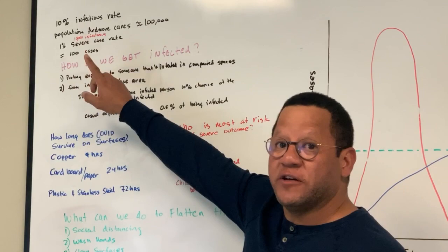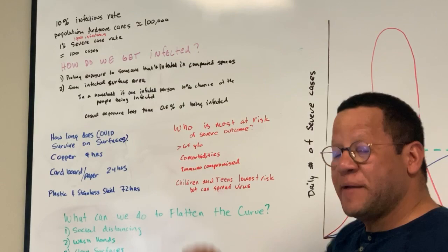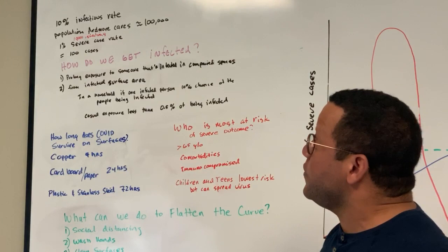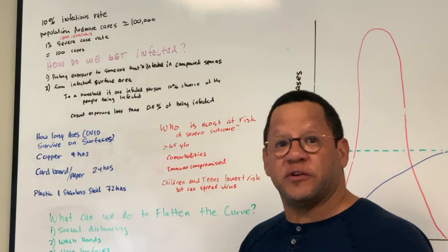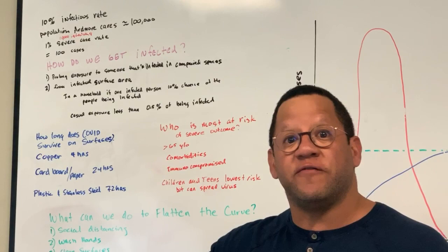With 10,000 infections we expect 1% of those to be severe. That equals 100 cases. So keep that number 100 cases in mind because that's an important number for us. How do we get infected to start with? A large majority of us get infected by being in crowded compact areas with exposure to someone that's infected. The second way we get infected is from contacting it from surface areas that are infected already.